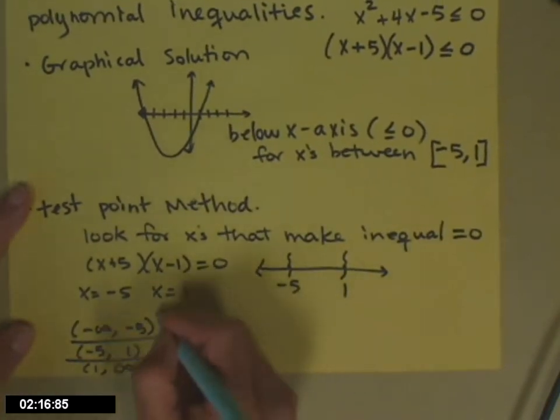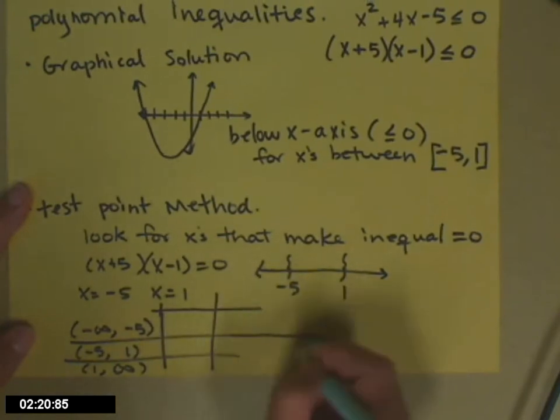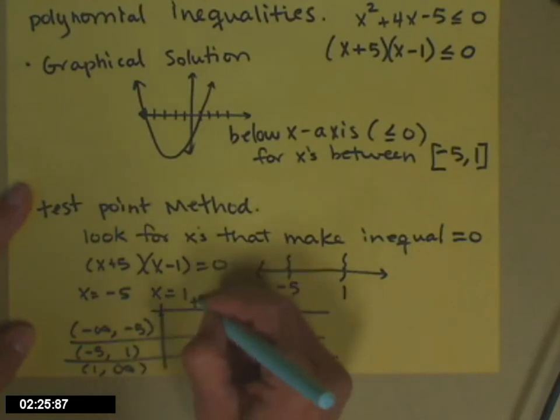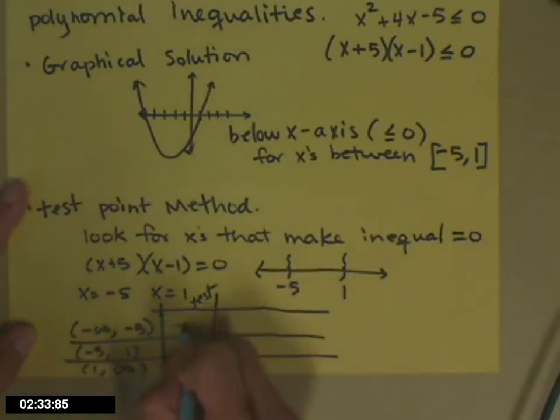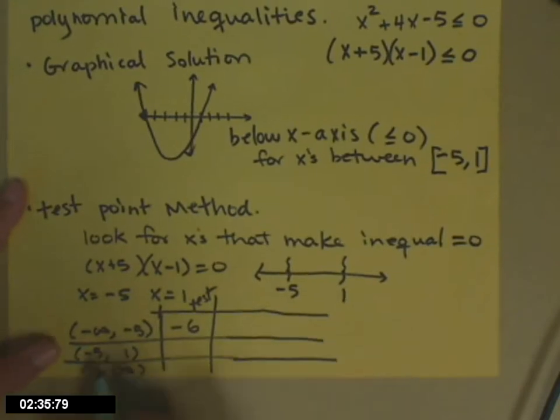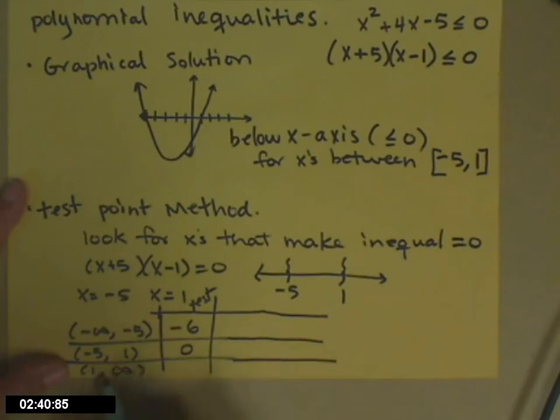What you're going to do then is pick a number in each of those intervals and test it in the inequality. If it works for your test point, then it will work for every number in that interval. So between negative infinity and negative five, a good test value would be negative six. From negative five to one, zero's in there, I'll choose that, that's easy to plug in. And from one to infinity, I'll choose two.